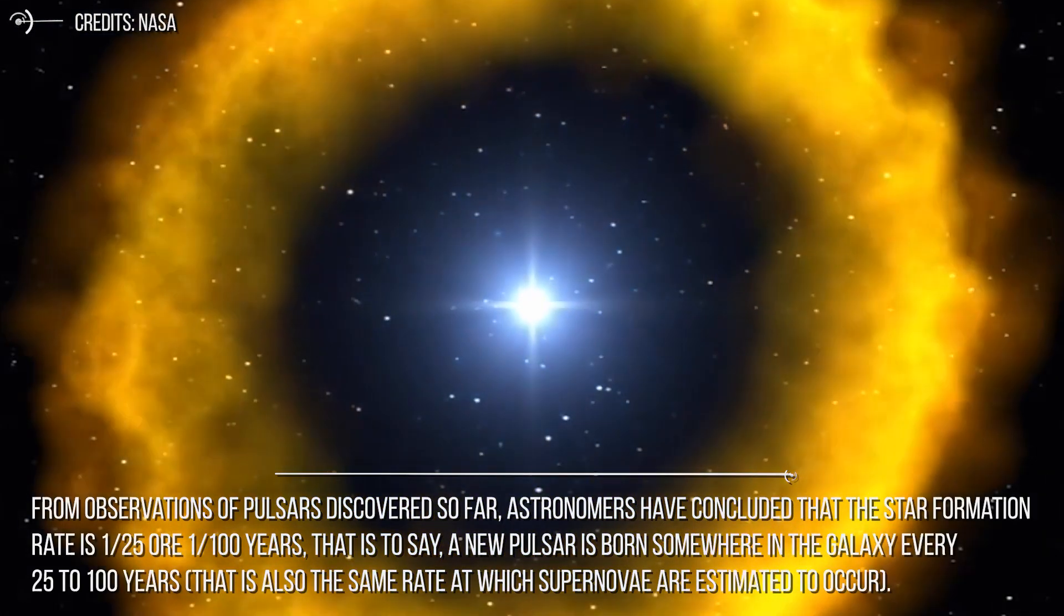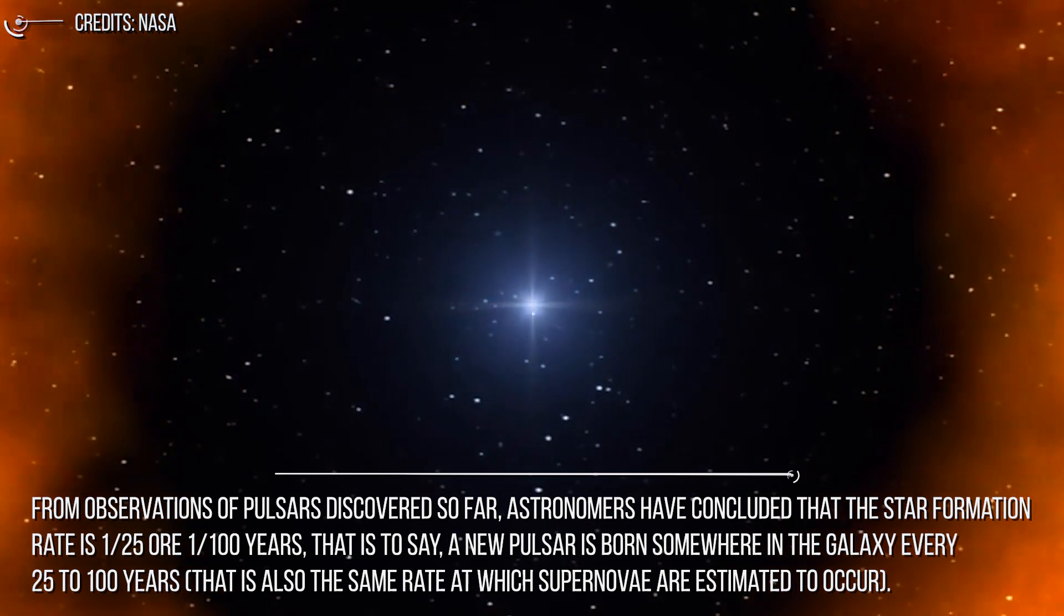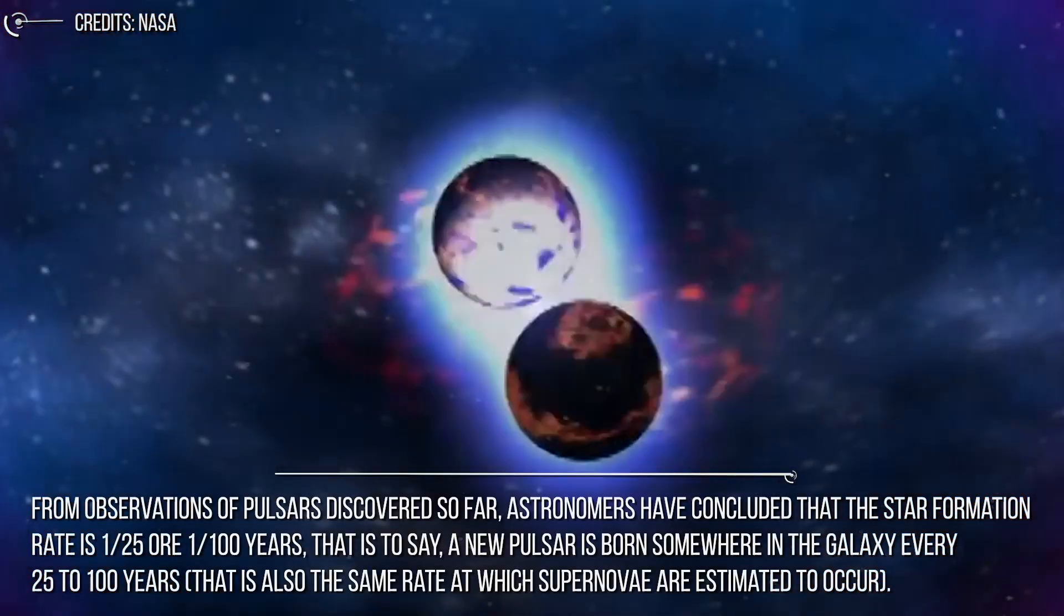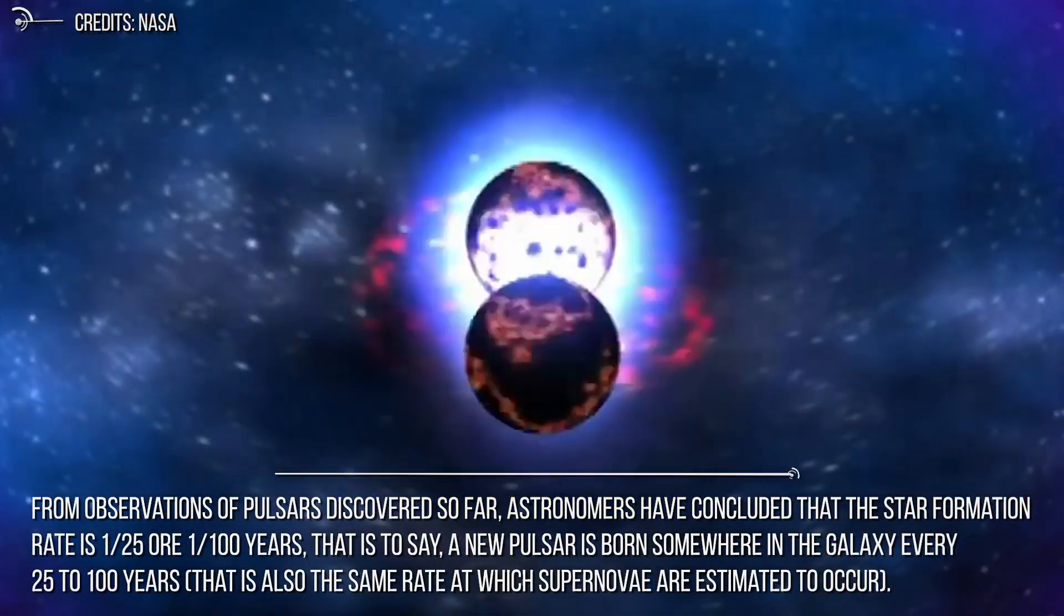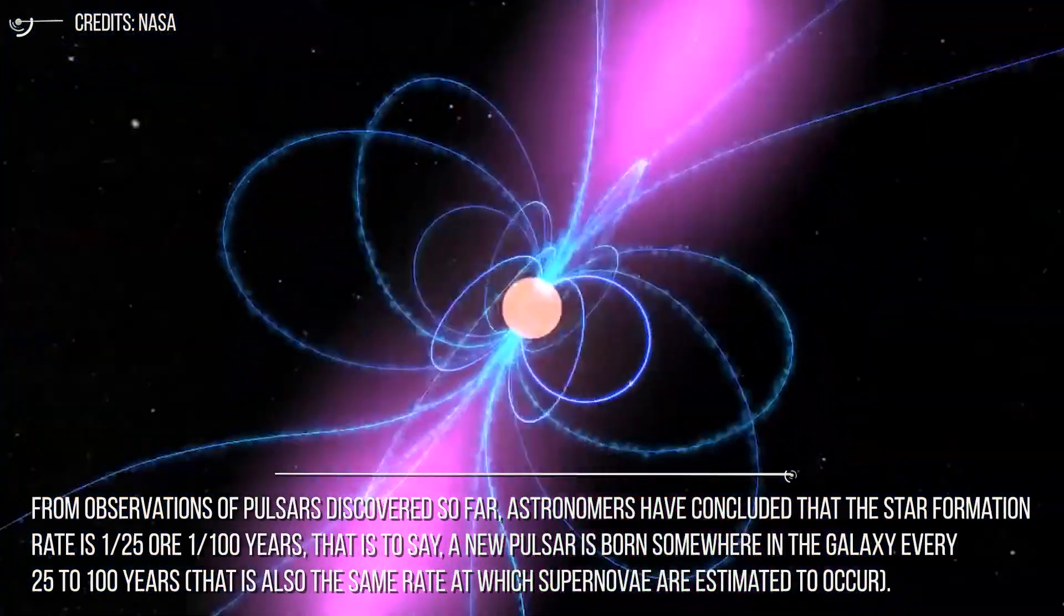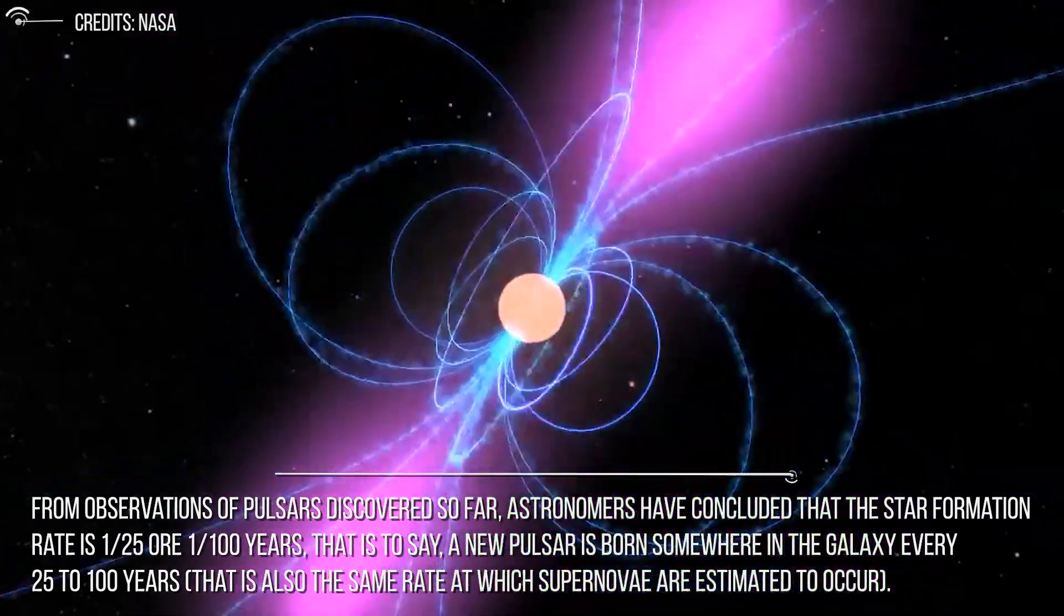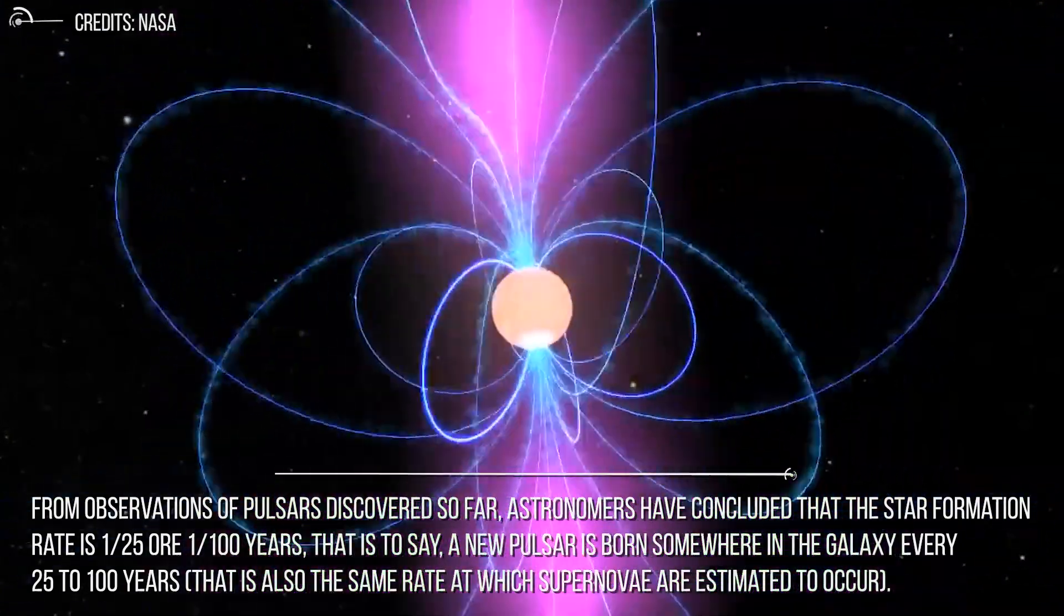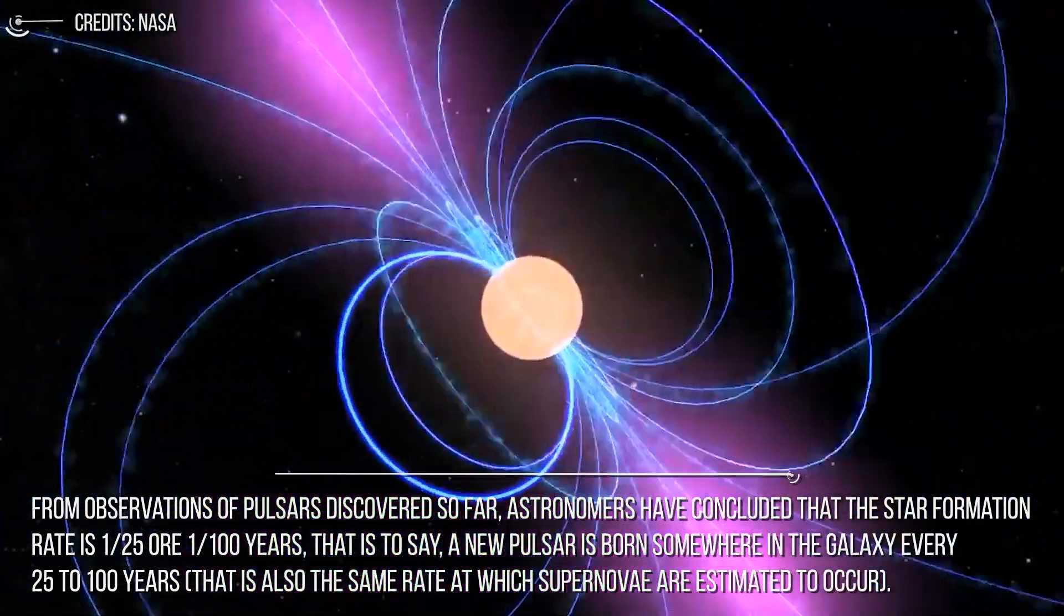From observations of pulsars discovered so far, astronomers have concluded that the star formation rate is 1 to 25, or 1 to every 100 years. That is to say, a new pulsar is born somewhere in the galaxy every 25 to 100 years. That is also the same rate at which supernovae are estimated to occur.